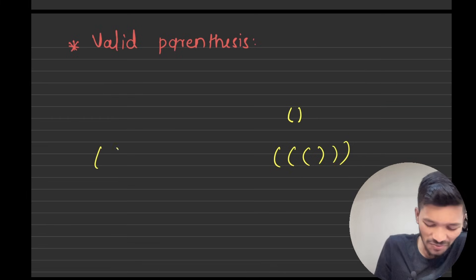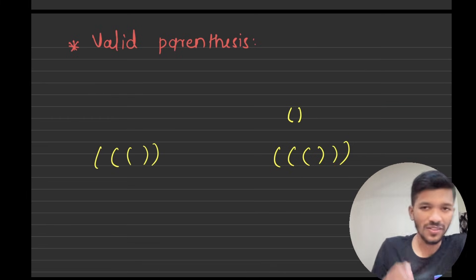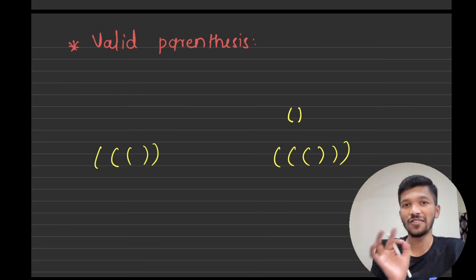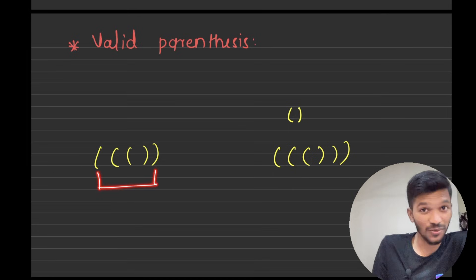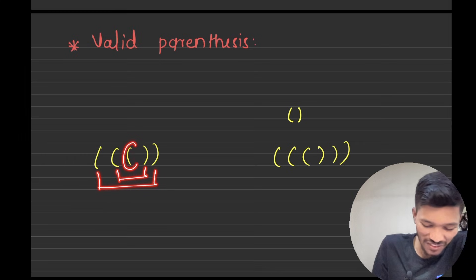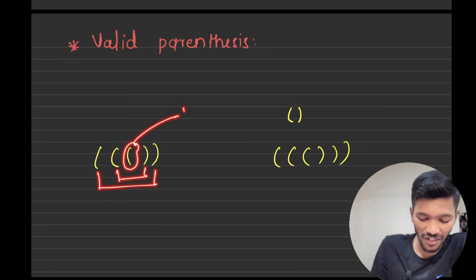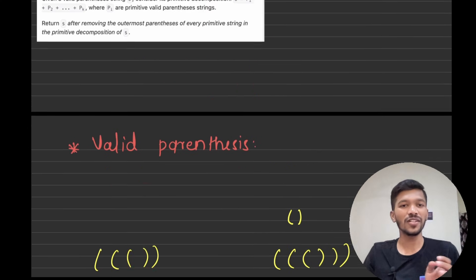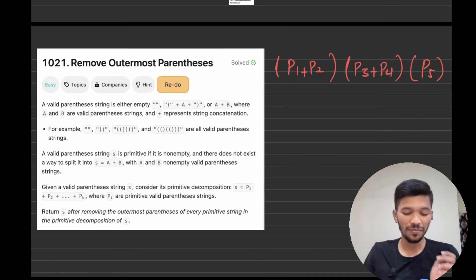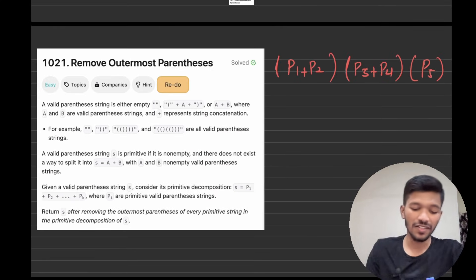But if I write a string like this one, it is not a valid parenthesis. If you observe carefully, for this opening bracket I have a closing bracket, and for this opening I have a closing bracket, but for this opening bracket I don't have any closing bracket — therefore this is not a valid parenthesis.